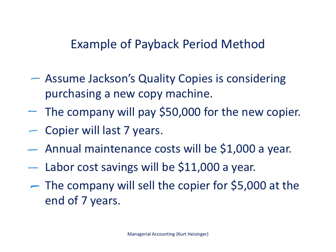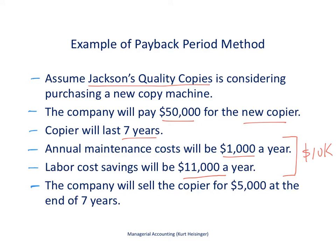In this example we are Jackson's Quality Copies. We make copies for customers and provide other services as well. We expect to pay $50,000 for a new copier. The copier is expected to last seven years, annual maintenance costs will be about $1,000 a year, and the labor cost savings will be about $11,000 a year. The net of these two cash flows means we are going to see about $10,000 come in every year related to this investment.